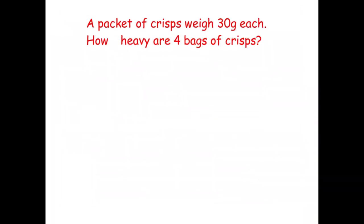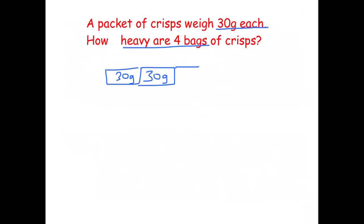A packet of crisps weighs 30 grams each — how heavy are four packets of crisps? Let's underline the important bits: one packet of crisps is 30 grams and we have to work out how heavy four packets are. Using a bar model we have the first bag being 30 grams, second bag 30 grams, third bag 30 grams, and the fourth bag 30 grams — we have to work out the total.